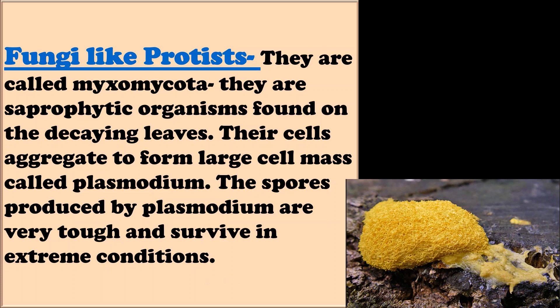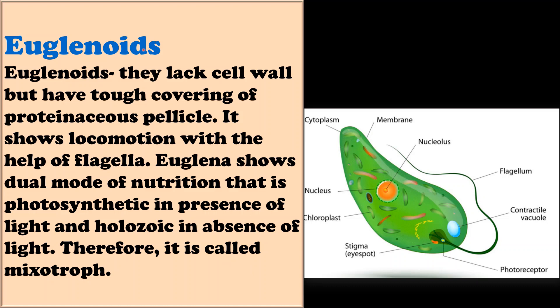The last group is euglenoids, which includes organisms like Euglena. They show locomotion with the help of flagella. They don't have a cell wall but their body is covered with a thick protective covering called pellicle, which is made up of protein. These organisms show a dual mode of nutrition — in presence of sunlight they are photosynthetic, and in absence of sunlight they are holozoic. Therefore, they are called mixotrophs.